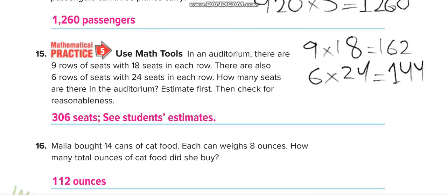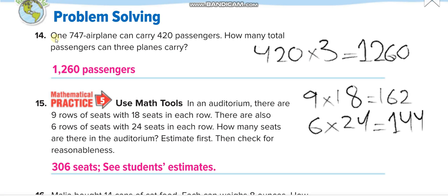Here 747 airplane, it's the name of plane, guys. So no, this is not a number, it's a name. Can carry 420 passengers. How many total passengers can 3 planes carry? So 420 times 3. 420 times 3 equals 1260.